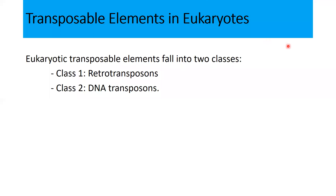Welcome back for the remaining lecture. As we were discussing, there are two different types or two major classes of transposable elements in eukaryotes: retrotransposons and DNA transposons. We shall discuss them one by one.